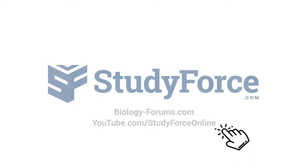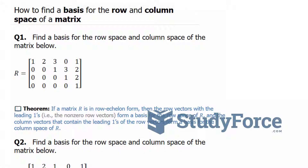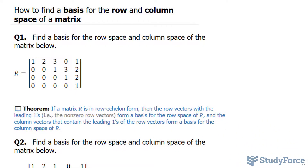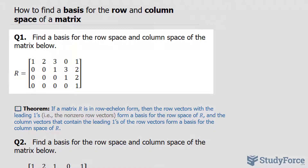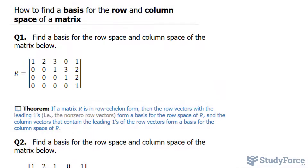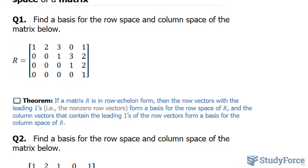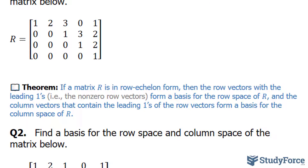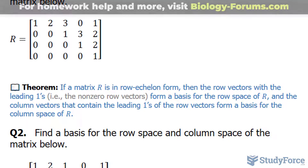In this lesson, I'll show you two examples on how to find the basis for the row and column space of a matrix. The question reads: find a basis for the row space and column space of the matrix below. Before we begin tackling this problem, I need to go through an important theorem that will help you understand what we're doing.